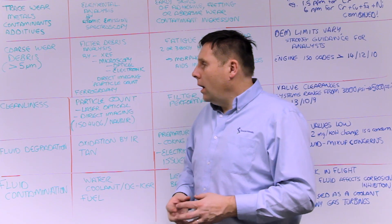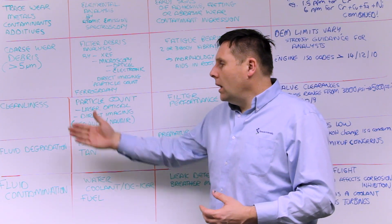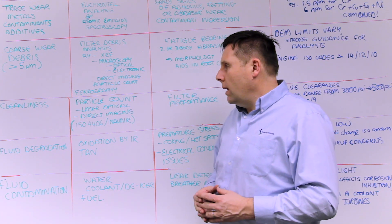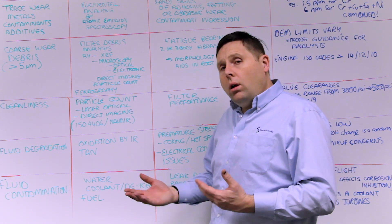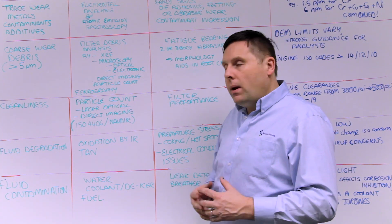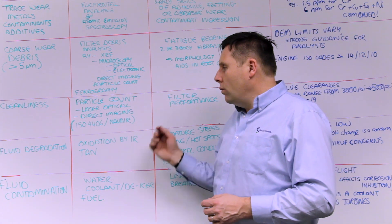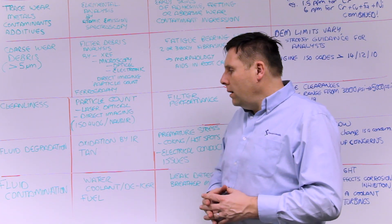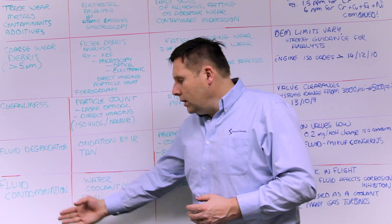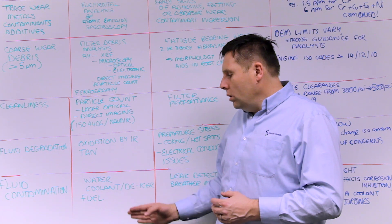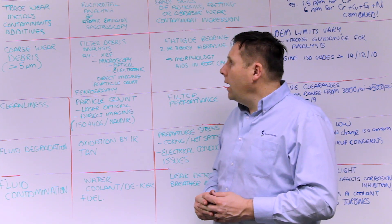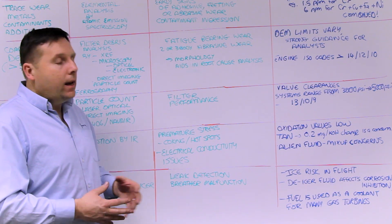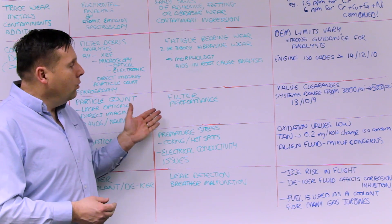Another level of properties we watch for is cleanliness, fluid degradation, and fluid contamination. For cleanliness, we look at overall particle counting and the general cleanliness level — particularly important for hydraulic systems and some engine applications — using ISO 4406 or NAS codes with laser or direct imaging. For fluid degradation, we look at oxidation by infrared and total acid number. For fluid contamination, we look for water, coolant, de-icer fluids, or fuel dilution issues.